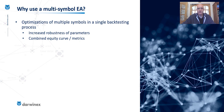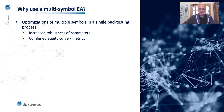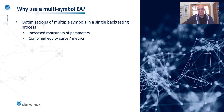Why is it useful to have a multi-symbol EA? The first reason is that it will allow you to undertake optimizations of multiple symbols in a single backtesting process. What I'm talking about with a multi-symbol EA in a backtesting context is different to the option within the strategy tester to test all symbols in the market watch window. With that built-in capability, this runs separate backtests on each of the symbols, so if you backtest 20 symbols, you'll end up with 20 sets of results. What I'm talking about here is a single set of results that incorporates all of the trades from every one of those symbols.